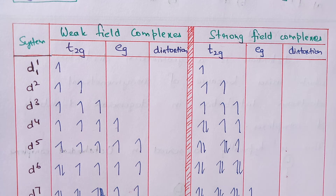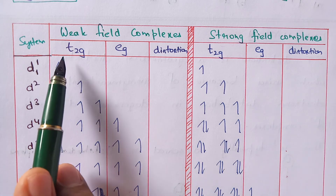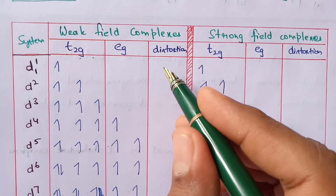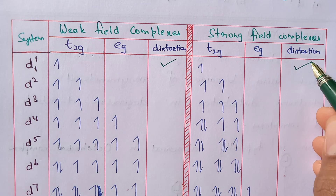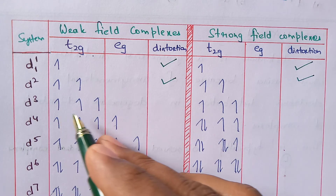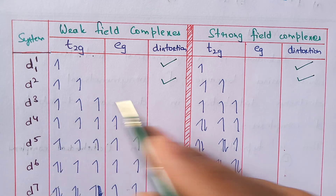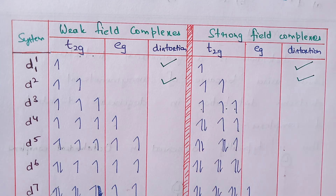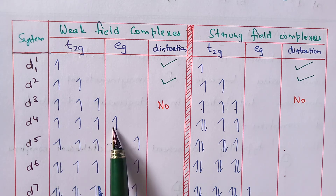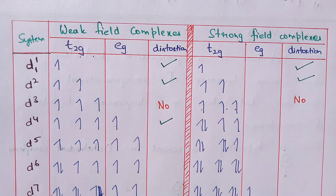Now we identify where Jahn-Teller distortion takes place. Whenever there is unequal distribution of electrons in a degenerate set, there will be distortion. In D1, the T2G set has three orbitals but only one is occupied — unsymmetrical distribution, so Jahn-Teller distortion occurs. D2 has the same situation. D3 has all three orbitals equally filled in both weak and strong field — no distortion. For D4, T2G is equally filled but EG is not, so distortion occurs in both weak and strong field.